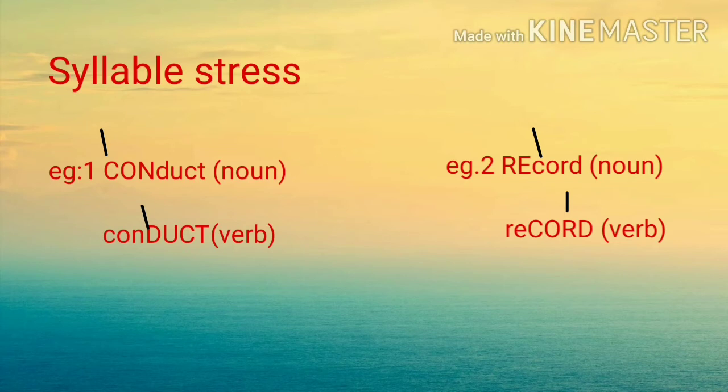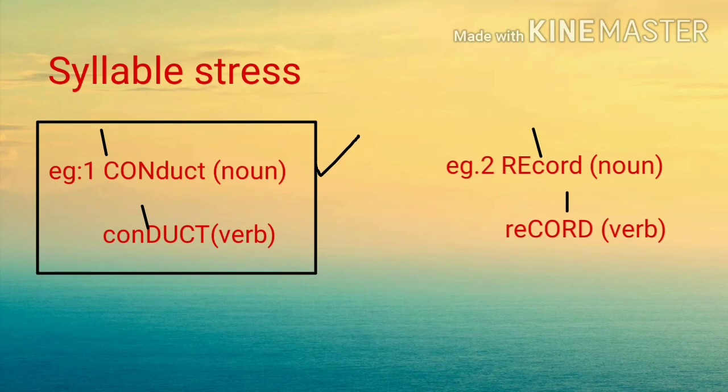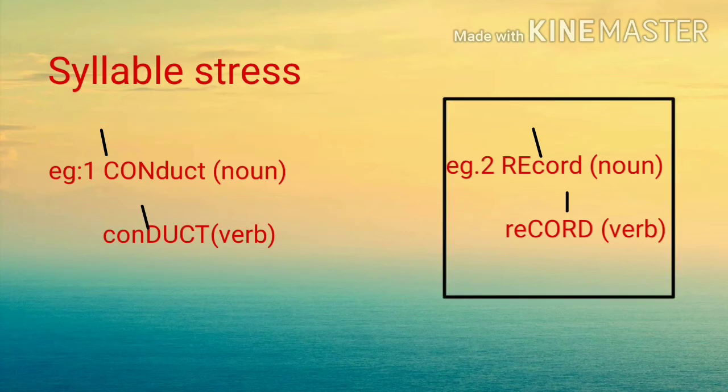Syllable stress example: 'conduct' with emphasis on the first syllable is the noun, meaning a standard of behavior, while 'conduct' with emphasis on the second syllable is the verb, meaning to cause, to direct, or to convey.